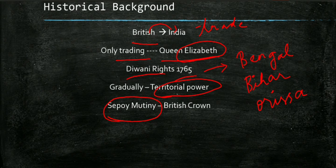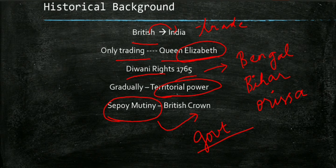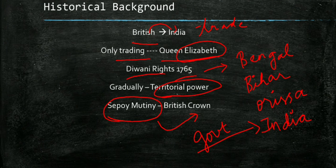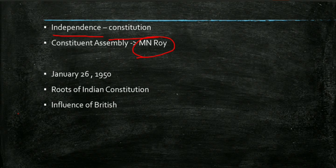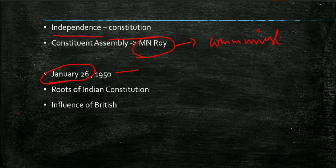They started ruling us for hundreds of years, but through our revolutionary leaders and our Satyagrahis we got independence. The Sepoy Mutiny was the event which made the British shake, and the British Crown came into existence, directly taking control of India's affairs. After this we got independence and our own constitution. The Constituent Assembly was proposed by MN Roy, even before independence. He was a great communist leader. Our constitution came into being on January 26, 1950.